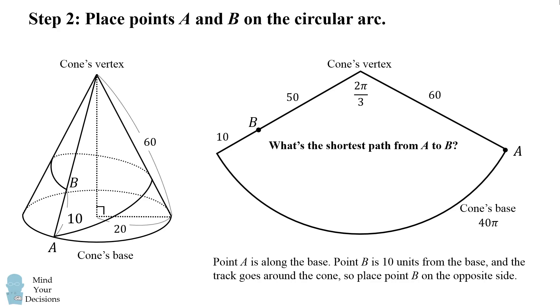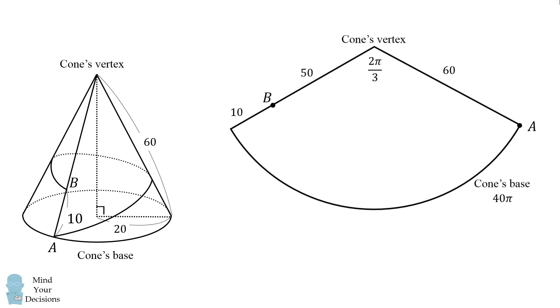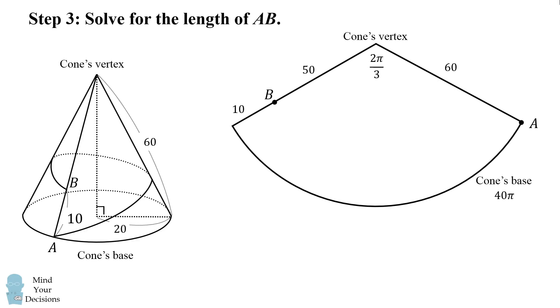Now what's the shortest path from A to B? Well, in this circular arc the answer is simple. It's a straight line between points A and B. So now we're going to solve for the length of AB. We draw a straight line between A and B. So how can we solve for this length?